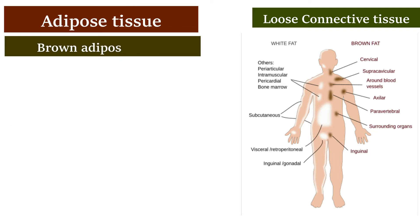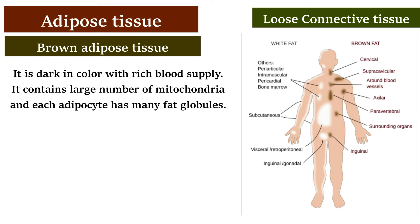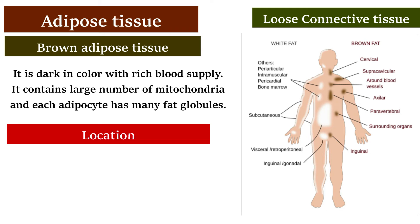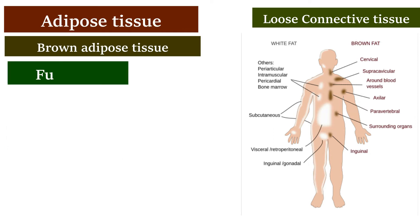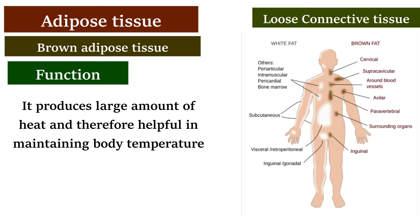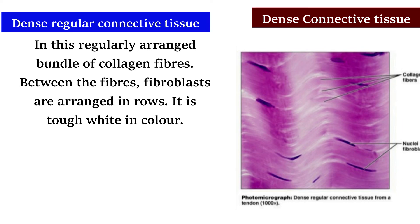Brown adipose tissue is dark in color with a rich blood supply. It contains a large number of mitochondria and each adipocyte has many fat globules. It is mainly found in the fetus and infants; in adults it is present in small amounts in the interscapular region. Its function is to produce large amounts of heat, helping to maintain body temperature.